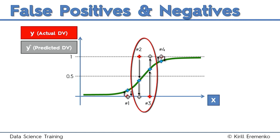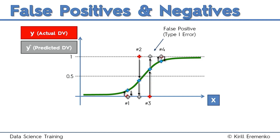Now for observations two and three, the gray mark for observation two is at the bottom, meaning the model predicts — based on age in this single-variable logistic regression — that this person is not going to take up the offer. However, the red mark is at the top, meaning they did take up the offer, so the logistic regression made an error. For person three, the gray mark is at the top predicting they will take up the offer, but the red mark is at the bottom — they didn't take it up — so the model made a mistake again.